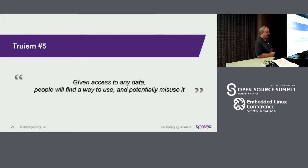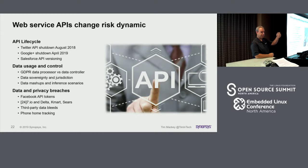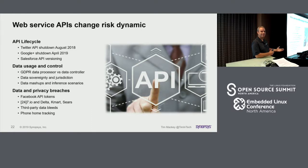Truism number five: given access to data, people will find a way to use it and potentially misuse it. The real challenge is that today an application is really a mashup of things, and web services APIs change everything. I fly Delta Airlines a lot. On board they can process card payments — behind that was a company called 24-7-IO. 24-7-IO was breached a year and a half ago. I had never heard of them, but I got a letter from Delta saying my credit card appears to have been compromised. The supply chain of web services becomes a very interesting scenario.